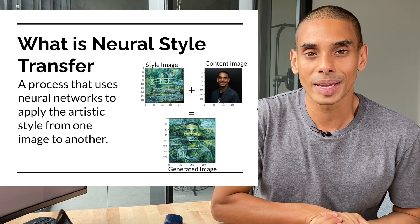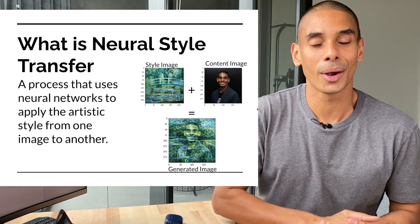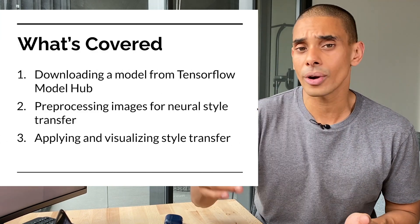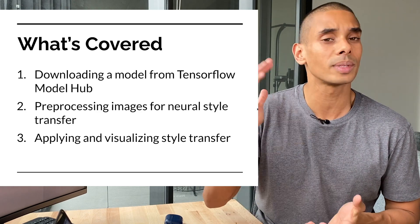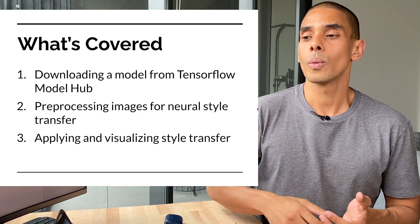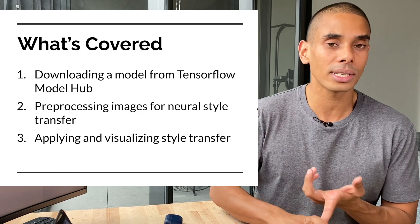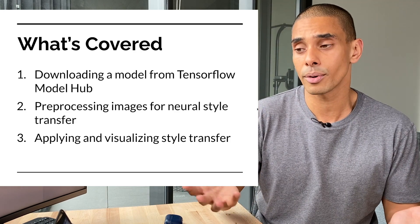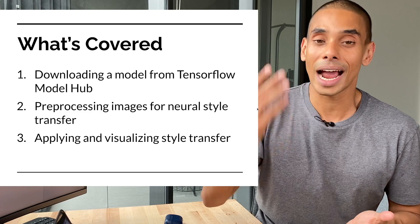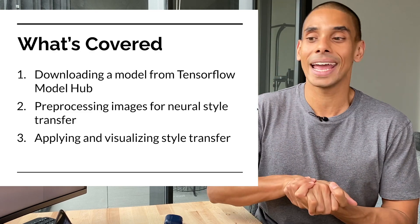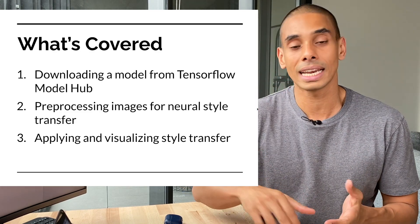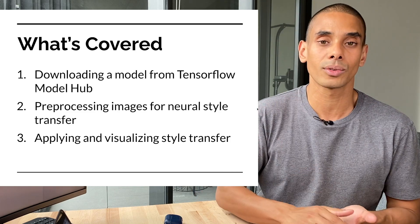Let's take a look at what we're going to be covering in this video. The first thing we're going to do is download a pre-trained neural style transfer model from TensorFlow Model Hub, which is going to make it faster to train. We're then going to pre-process our images for neural style transfer. Then we'll actually apply our style transfer to our content image and visualize the result.